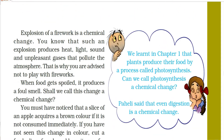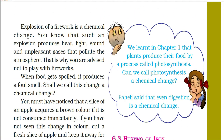Plants produce their food by the process called photosynthesis. Is it a chemical change? Yes, it is a chemical change — because new products are formed in this change.